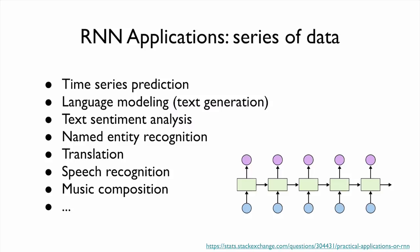Why is this useful? Because a lot of the data we have is a series of data, or time series. Anything with time series, like predicting stock prices, can be very useful for RNN. Or language modeling — we have to understand what was said previously to understand what's being said now. RNN is also very useful for text sentiment analysis, named entity recognition, translation, or speech recognition.